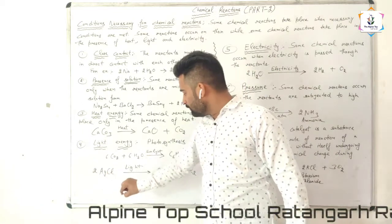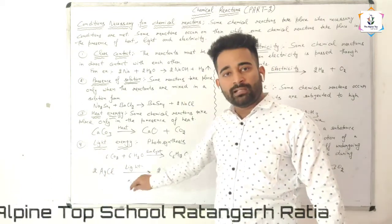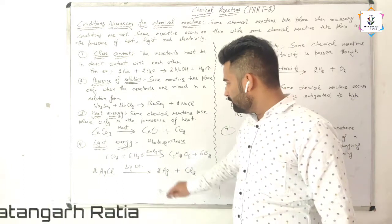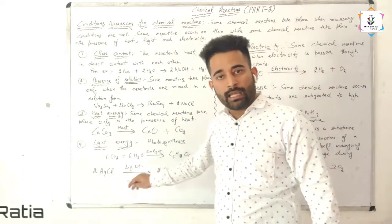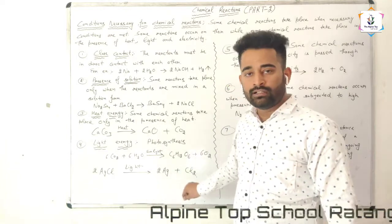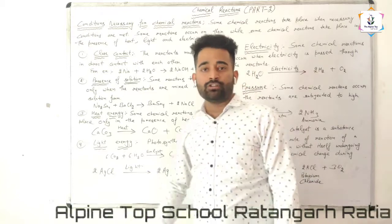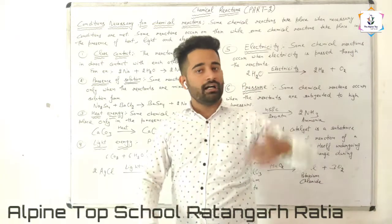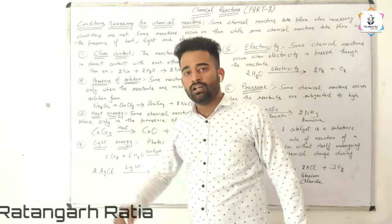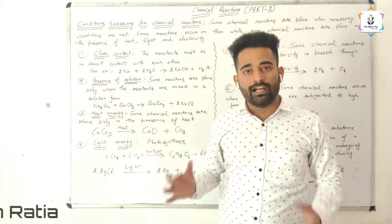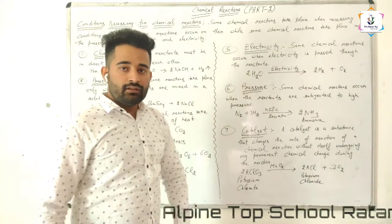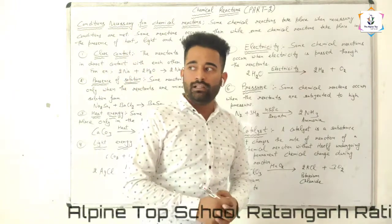A second example of light energy: silver chloride, when kept in exposure to sunlight, forms silver and chloride. This reaction was also used in earlier times for black-and-white photography.